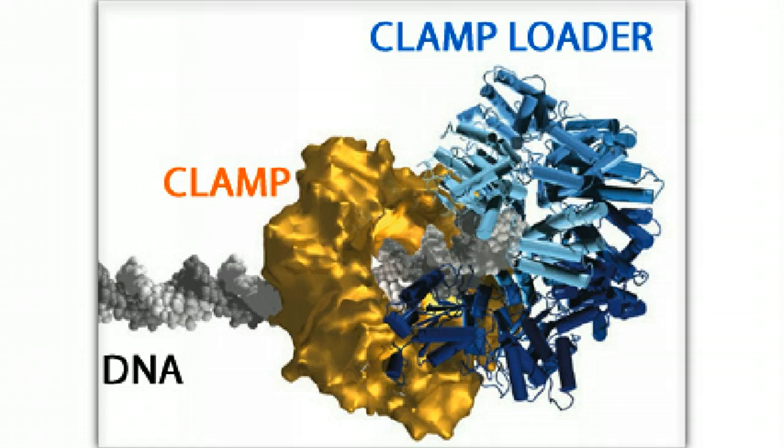The clamp protein is a hexamer of subunit polypeptides. It forms a closed donut. The hole in this donut is large enough for a DNA molecule. A clamp molecule on a DNA molecule can slide freely along the DNA.